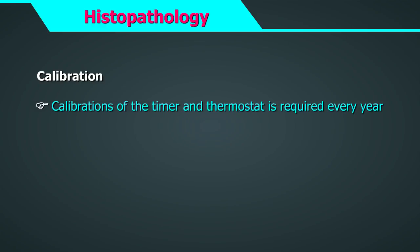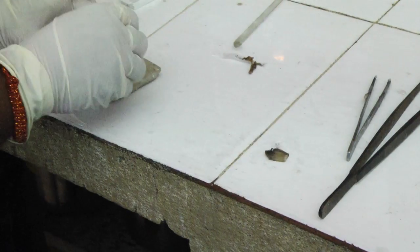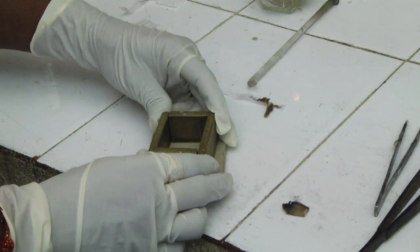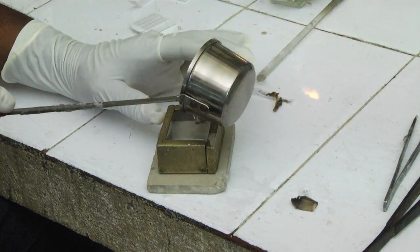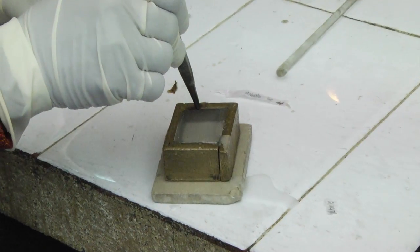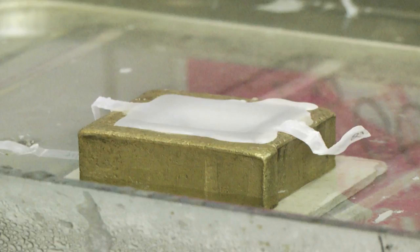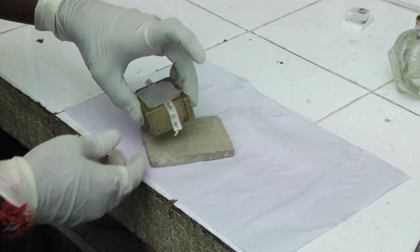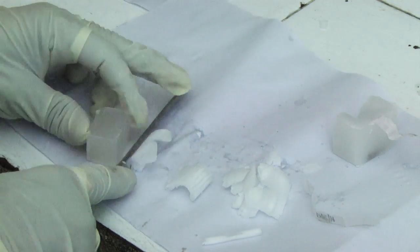Calibrations of the timer and thermostat are required every year or as per lab policies. For embedding, the impregnated tissue undergoes embedding in melted paraffin using metallic moulds. Lubrication of the metallic moulds is done first with liquid paraffin, then melted paraffin is poured in and the tissue is carefully embedded in the proper plane at the bottom of the moulds. It is important for the technician to have a sound knowledge of basic histology and tissue orientation to embed in the correct plane so that all layers of tissues are visible on the slide. The melted paraffin is allowed to harden at room temperature, after which the moulds are removed and blocks are trimmed and chilled in a refrigerator before cutting.